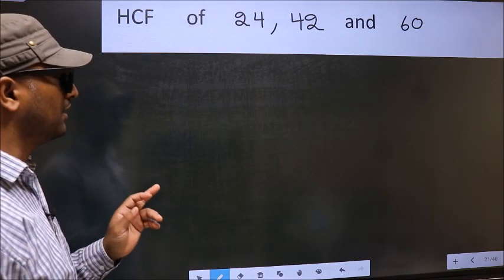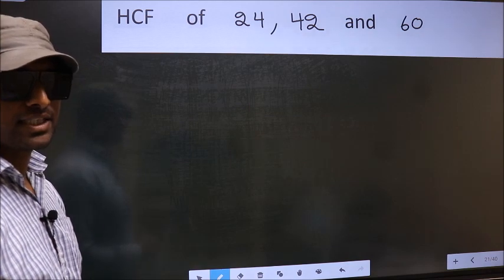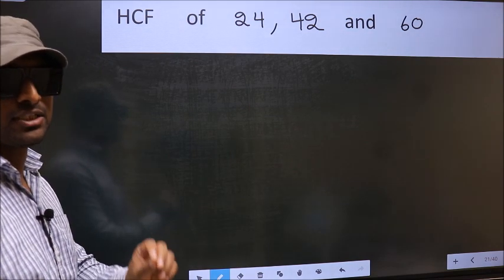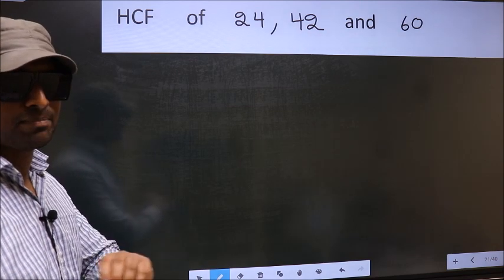HCF of 24, 42 and 60. To find the HCF, we should do the prime factorization of each number separately.